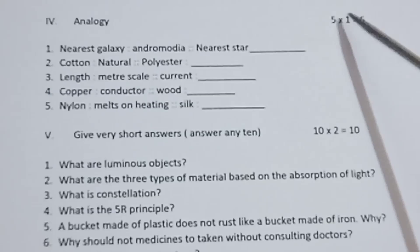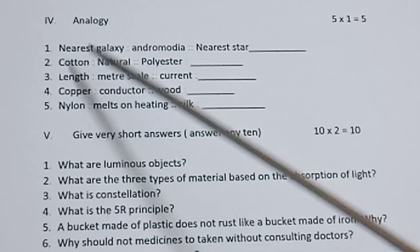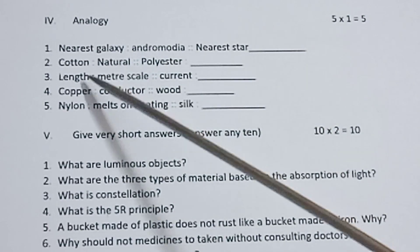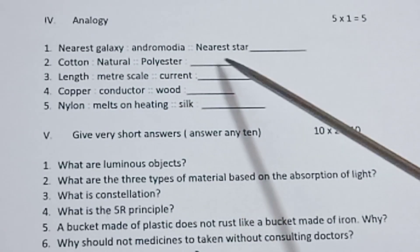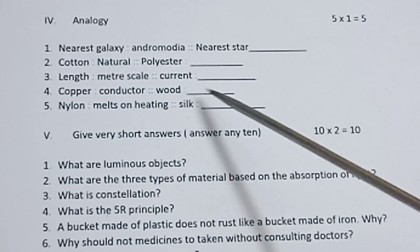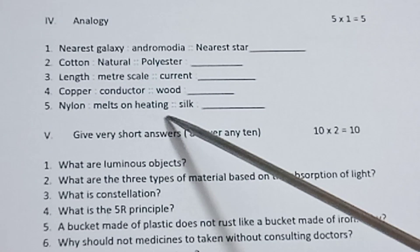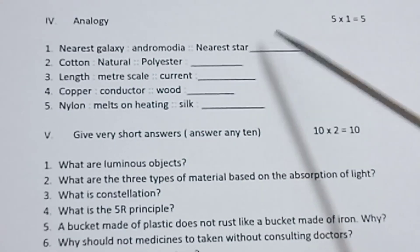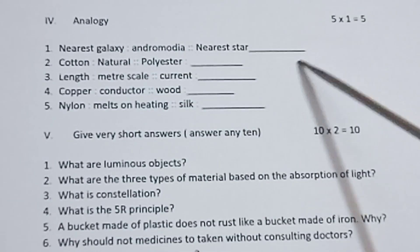Roman numeral 4, analogy. 5 into 1 is equal to 5. Nearest galaxy: Andromeda, nearest star: dash. Second one, cotton: natural, polyester: dash. Length: meter scale, current: dash. Copper: conductor, wood: dash. Nylon: melts on heating, silk: dash. Each dash carries one mark.